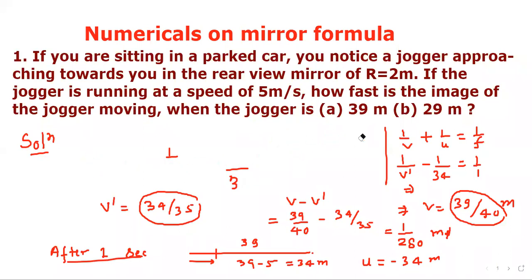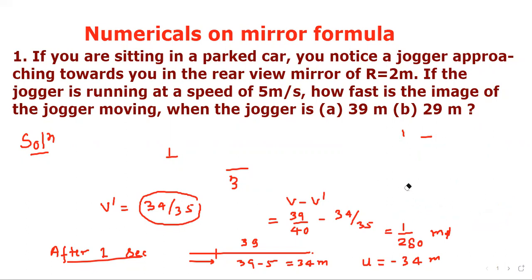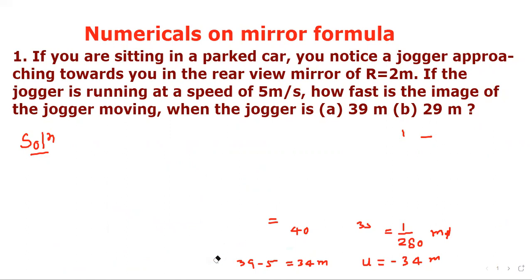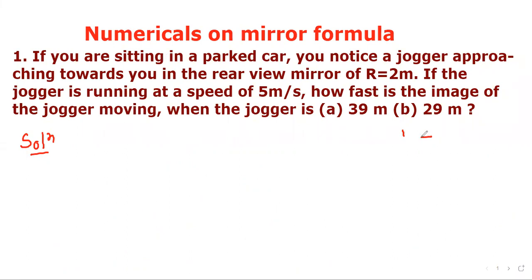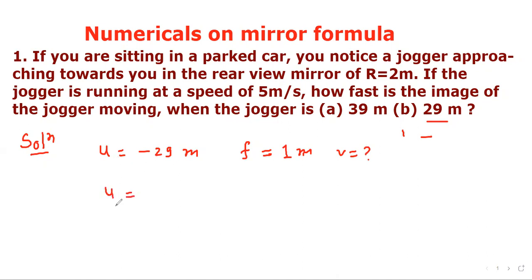Now let's consider the second part where the jogger is 29 meters away. Initially u = −29 m and f = 1 m. After 1 second, the new object distance u1 = −24 m (jogger covers 5 meters). We find v and v1 for both positions, then the difference gives the image speed.